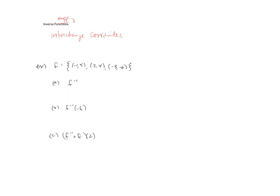So in our next example we're given a function f as three ordered pairs and in part a we want to find the inverse. So it really is as simple as just interchanging the coordinates.